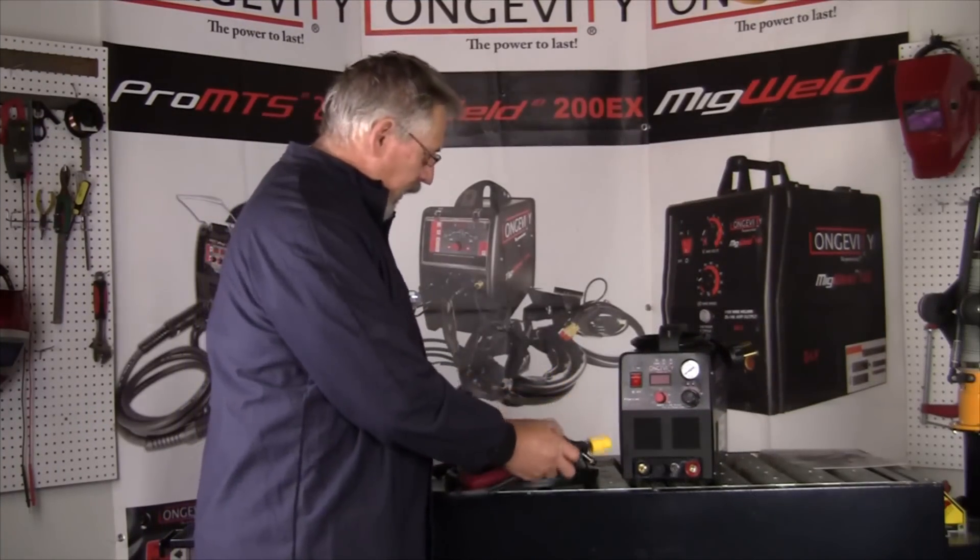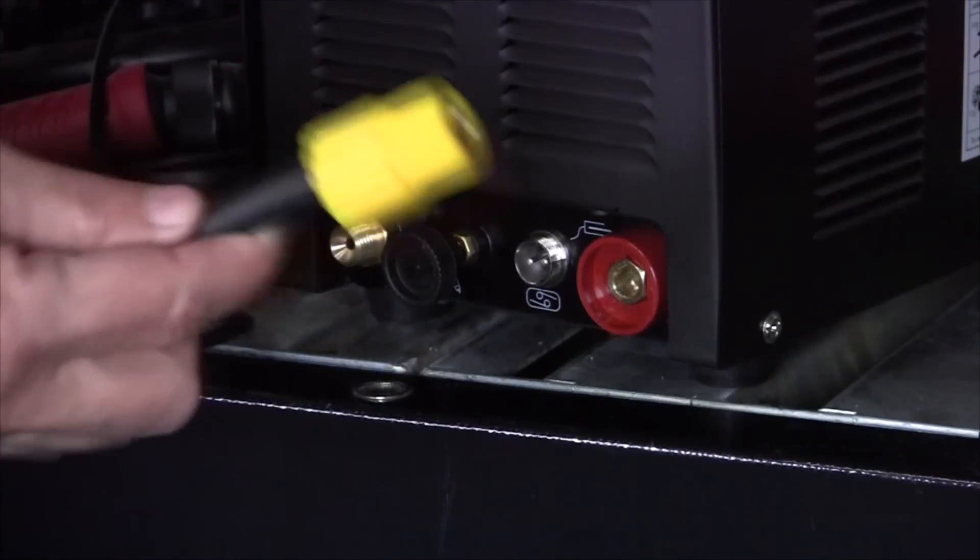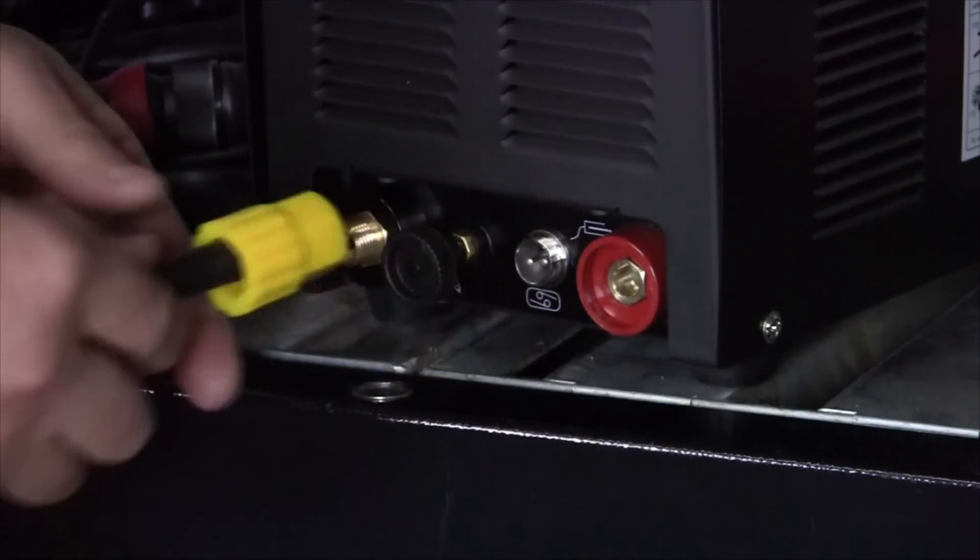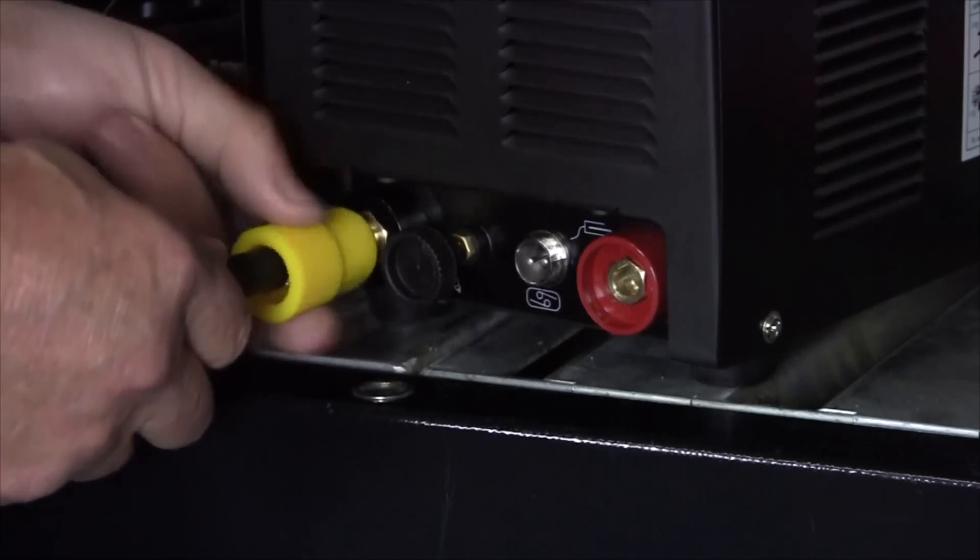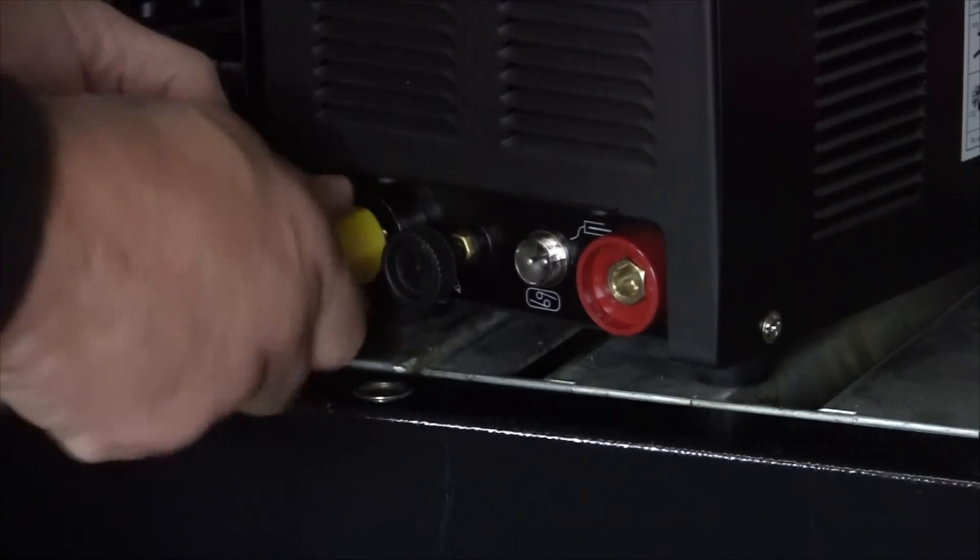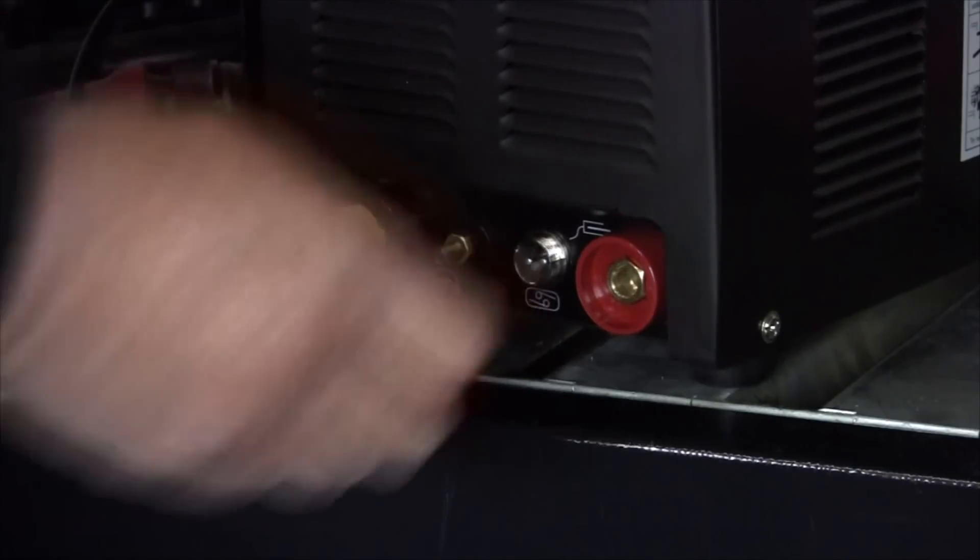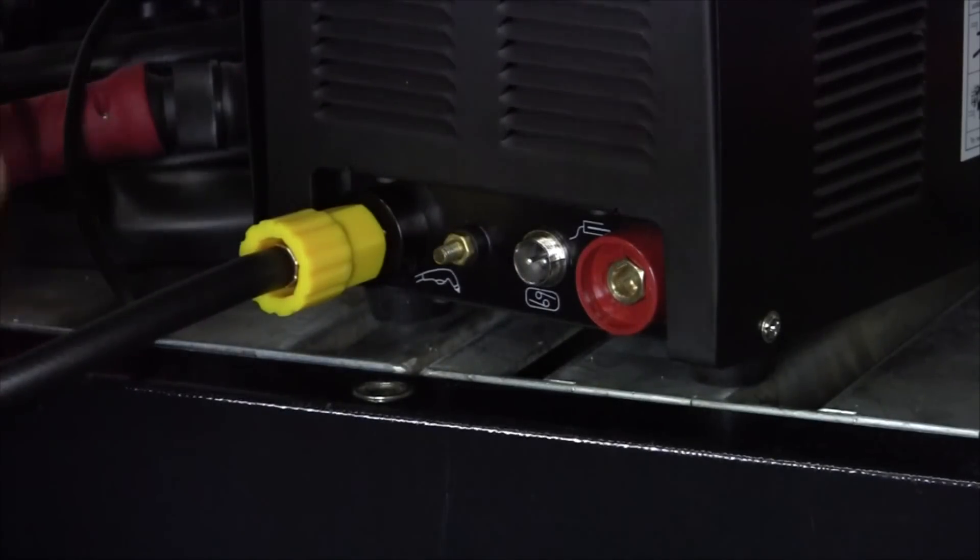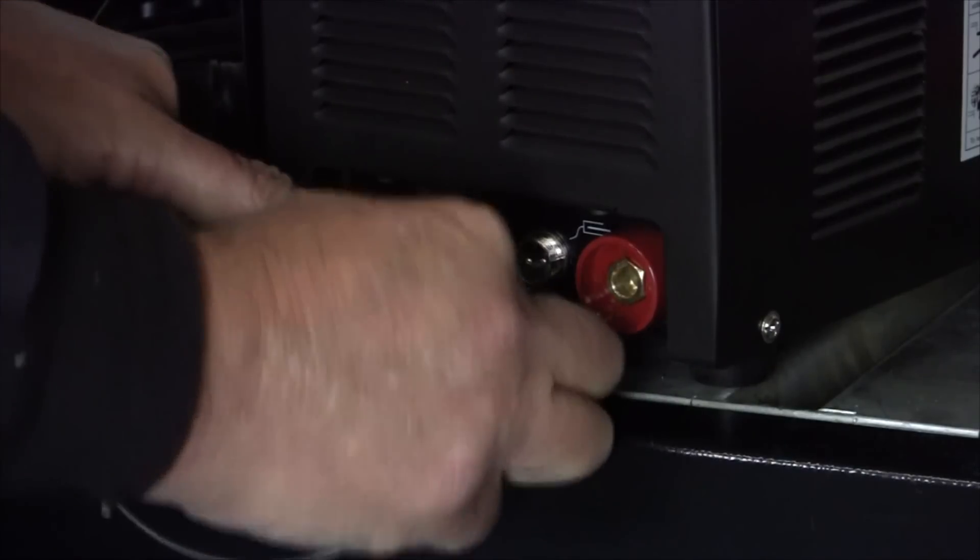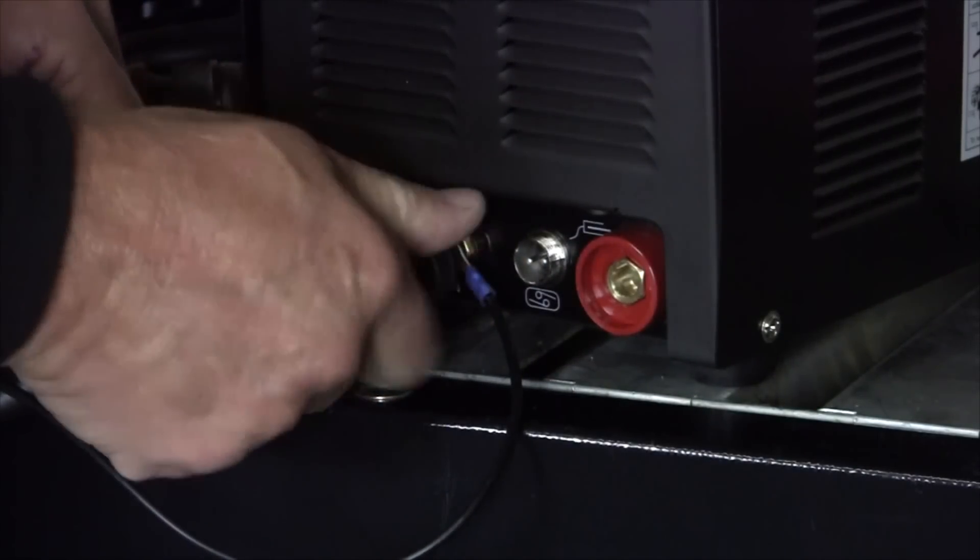Here's the torch and we're going to connect it to the machine now. Torch connections: here's our power and air supply. Threads in right here. Here's our pilot arc connection. This little clamp, and thread that cap down.